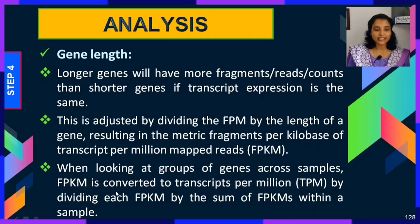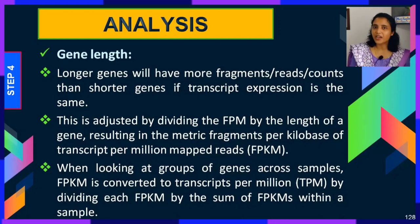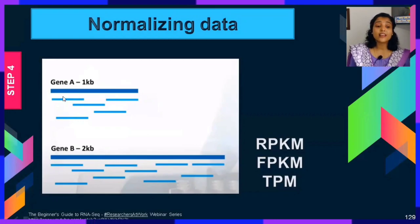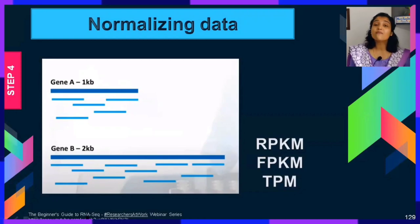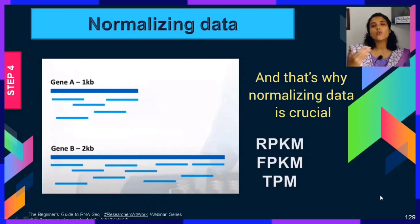When looking at groups of genes across samples, FPKM is converted to TPM — transcripts per million — by dividing each FPKM by the sum of all FPKMs within a sample. As a beginner, you need to understand these terms used in RNA-seq. For example, gene A at 1 KB might have 5 reads while gene B at 2 KB will have more reads, but that does not mean gene B is expressing more. You cannot simply take read count as a basis for expression levels — that is why normalizations like FPKM and TPM are needed.